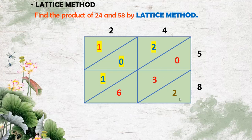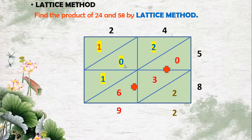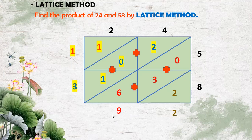Next we have to add these numbers diagonally. In the first diagonal we get only 2, so I write 2. In the second diagonal we have three digits: 0, 3, and 6. Adding them: 0 plus 3 is 3, and 3 plus 6 is 9, so I write 9. In the third diagonal we have 2, 0, and 1: 0 plus 2 is 2, and 2 plus 1 is 3, so I write 3. The last diagonal has a single digit, 1.